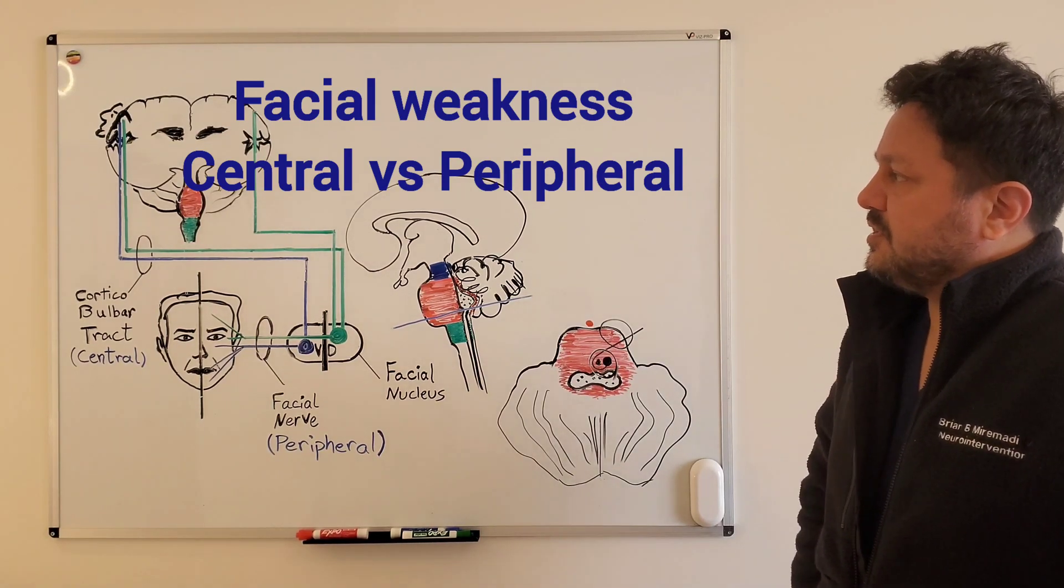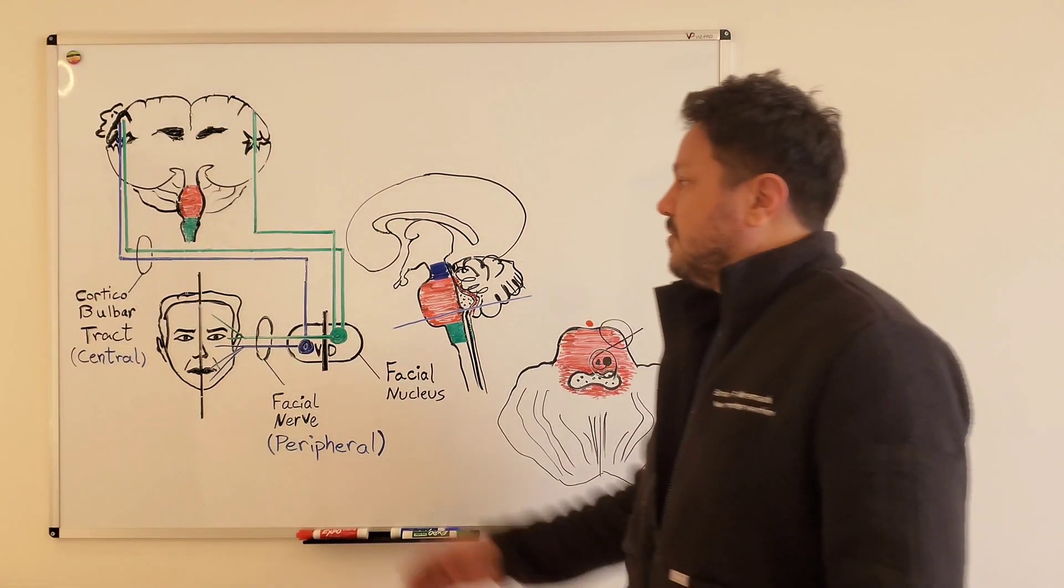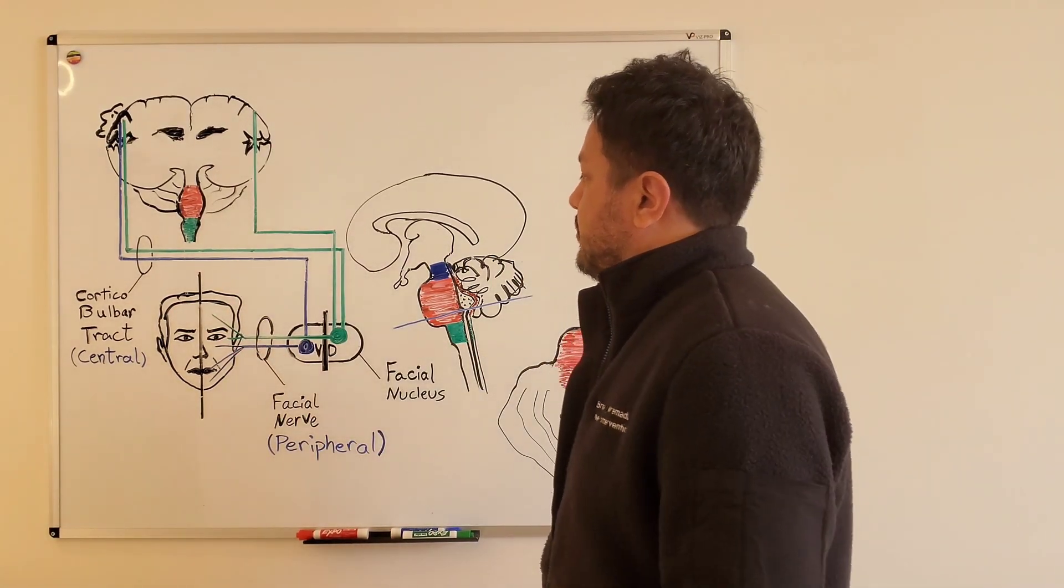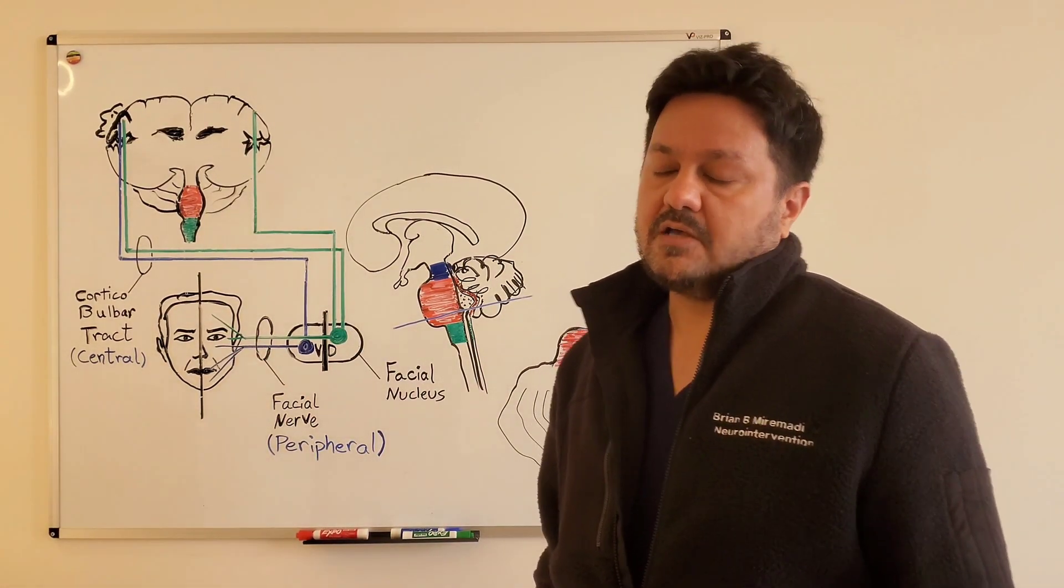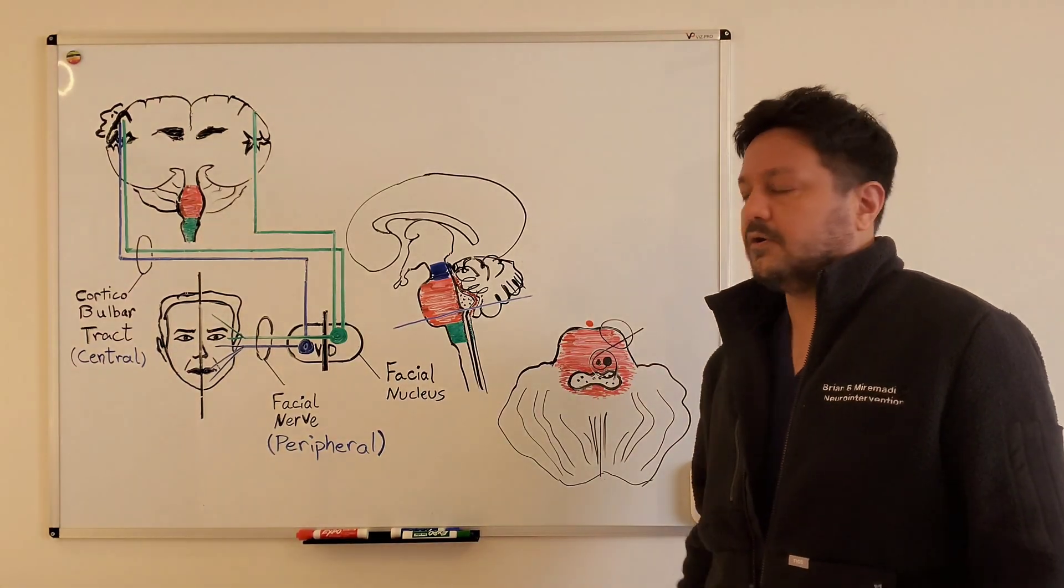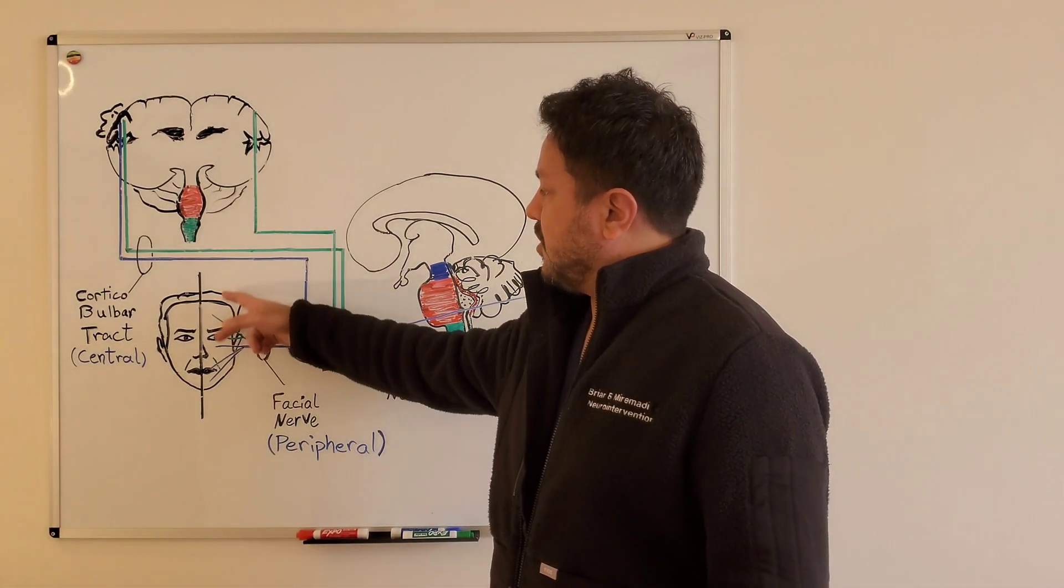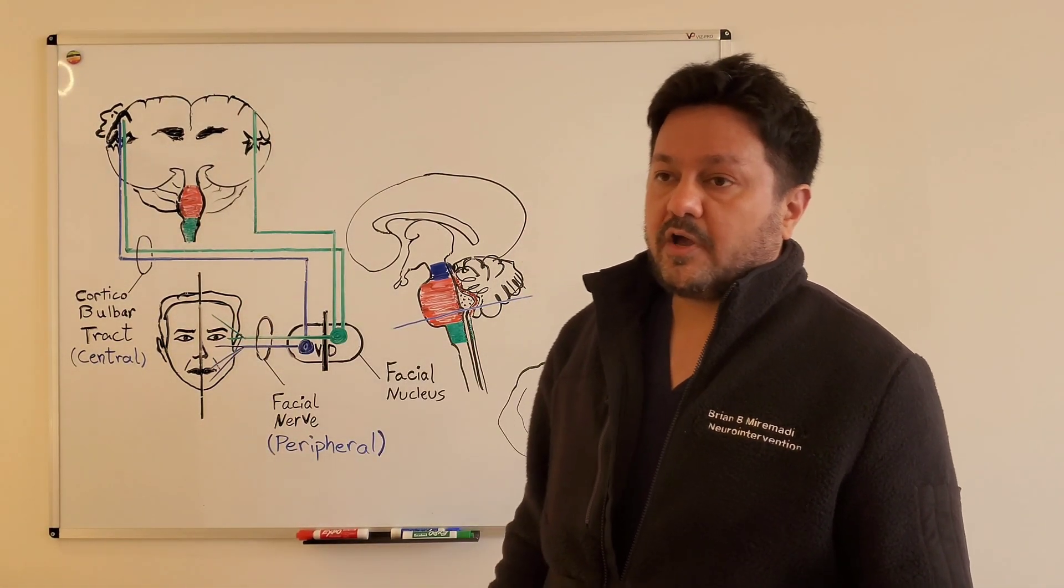Central causes of facial weakness, including stroke, are upper face sparing, but peripheral causes of facial weakness usually involve both upper and lower face. But why is that so?